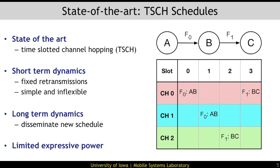State-of-the-art techniques that have been developed to address these issues revolve around time-slotted channel hopping, or TSCH. A TSCH schedule specifies the time slot and channel for each transmission. An example TSCH schedule can be seen on the right, where columns indicate slots and rows indicate channels. Short-term dynamics are handled by scheduling a series of fixed retransmissions for all released packets, circled in red. Long-term dynamics are handled by disseminating either an entire or partial new schedule. An important point is the expressive power of TSCH schedules: the actions nodes can take are limited to transmitting a specific packet, receiving a specific packet, or sleeping. However, as we will see, this is unnecessary and comes with a significant performance penalty.